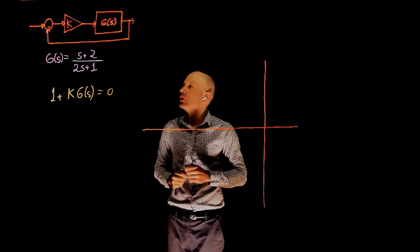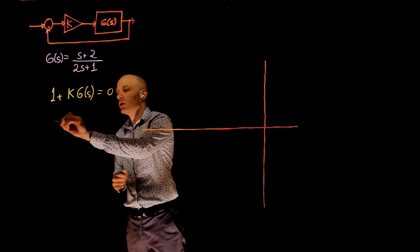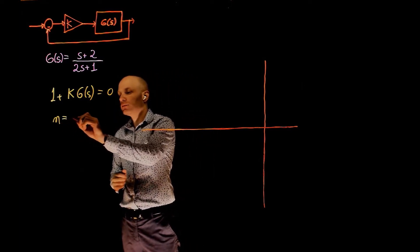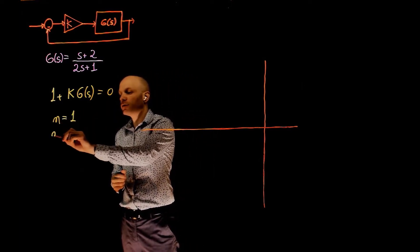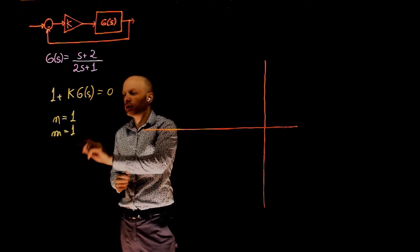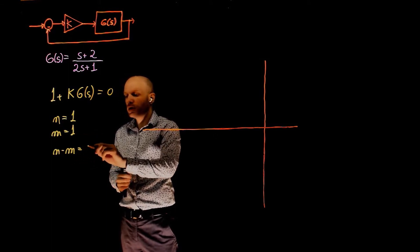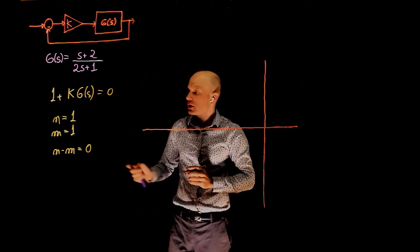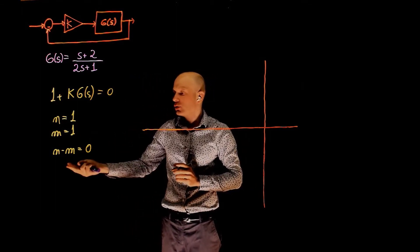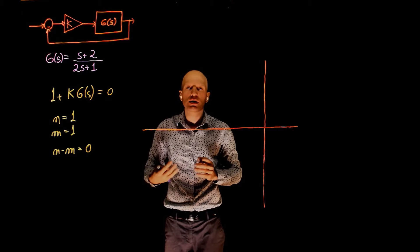Here we have one pole and one zero. The number of poles in this equation is 1, and the number of zeros in this equation is also 1. So n minus m is 0. This means that all poles have a zero to go to, and there will be no asymptotes tending to infinity.